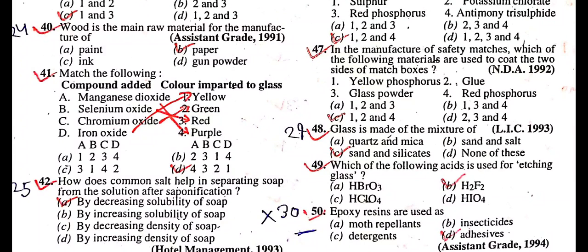Question: In the manufacture of safety matches, which of the following materials are used to coat the two sides of matchboxes? Answer is yellow phosphorus, glue, and red phosphorus.